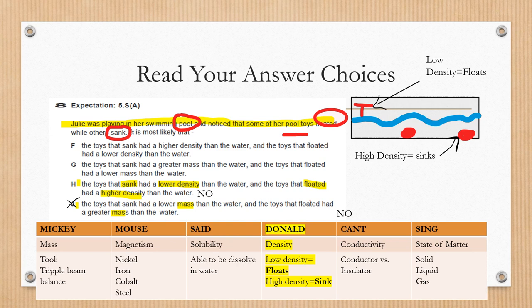Now I'm gonna read letter G. The toys that sank had a greater mass than the water and the toys that floated had a lower mass in the water. No, the property discussed here is density, not mass. Letter F says the toys that sank had a higher density than the water and the toys that floated had a lower density than the water. Yes, according to my chart and my drawing, the toys that are floating have low density, the toys that are sinking have a higher density. My answer is F.